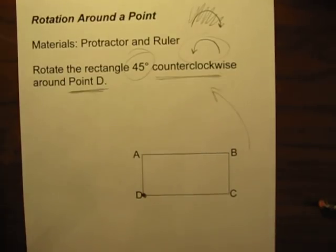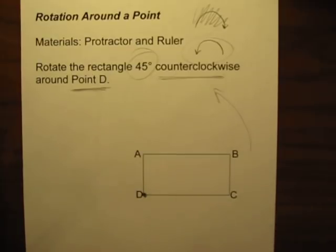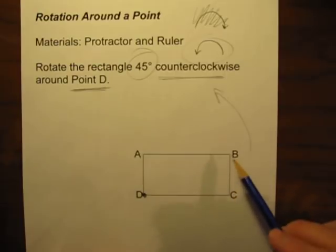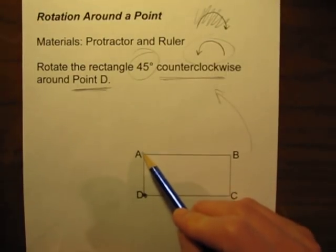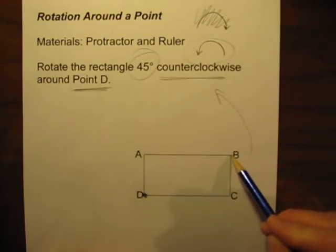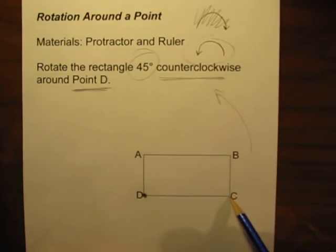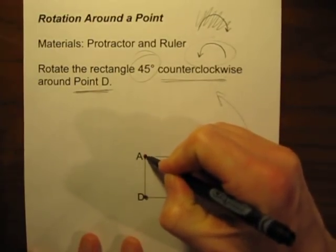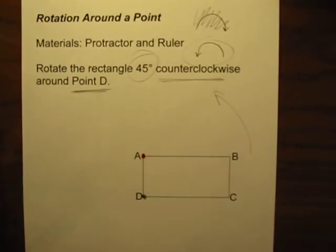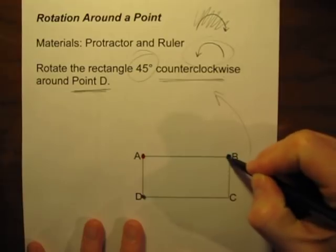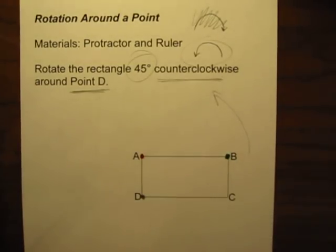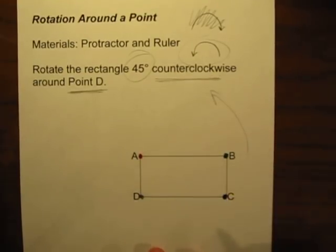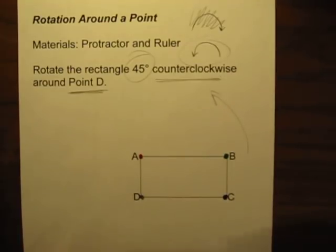Unfortunately, this is where students sometimes get confused — we can't just rotate the whole shape. We're going to have to rotate each of the corners, or vertices, one at a time. We'll rotate A 45 degrees counterclockwise around D, then point B 45 degrees, then C 45 degrees. This part is not essential, but sometimes people find it helpful to color code: point A in red, point B in green, point C in purple. Point D I won't color code because it's not going to move.